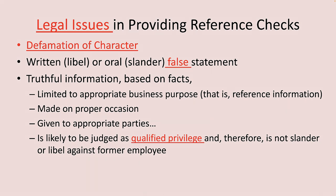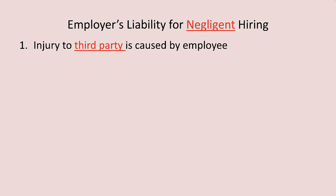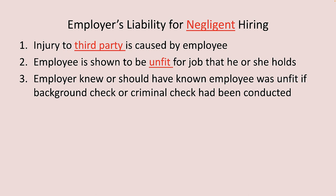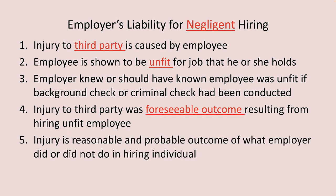Not at a cocktail party where others could overhear you and your comments could be construed as unprofessional, and therefore no longer qualified privilege. Many times we seek reference information as part of our due diligence to avoid liability for negligent hiring. Negligent hiring occurs when: there is an injury to a third party caused by an employee for whom you did not check references; the employee is shown to be unfit for the job; the employer knew or should have known the employee was unfit if a background or criminal check had been conducted; and an injury to a third party was a foreseeable and probable outcome of hiring that unfit employee.